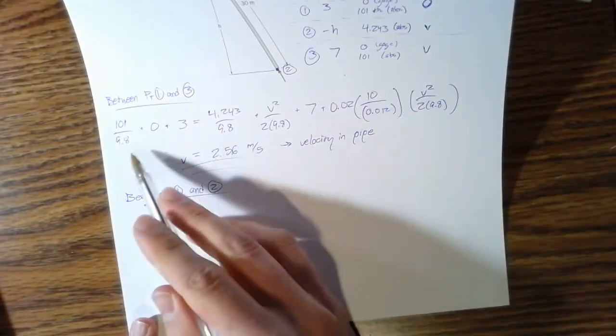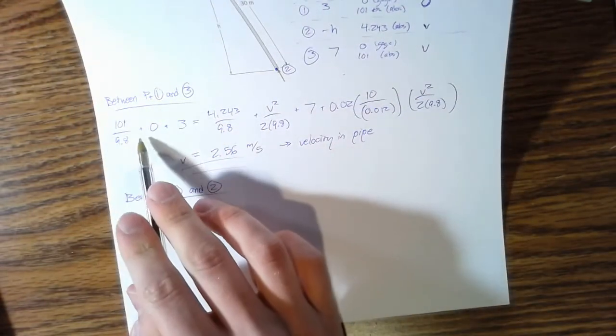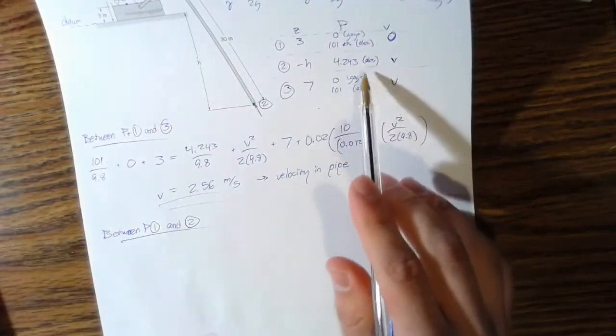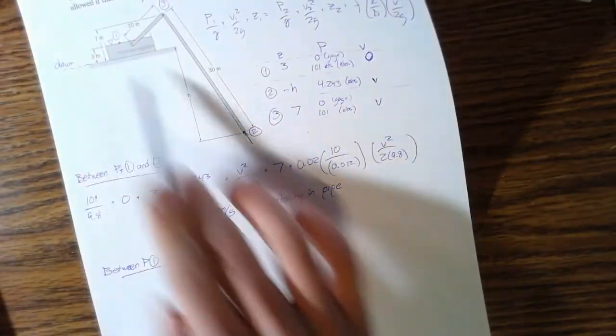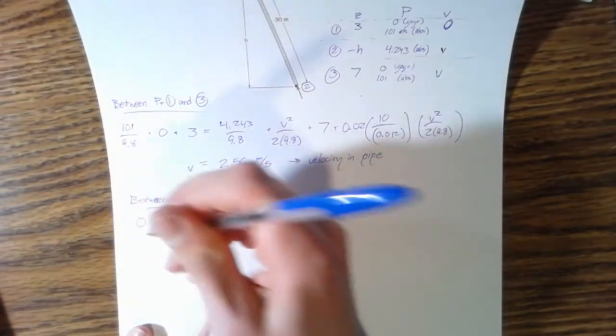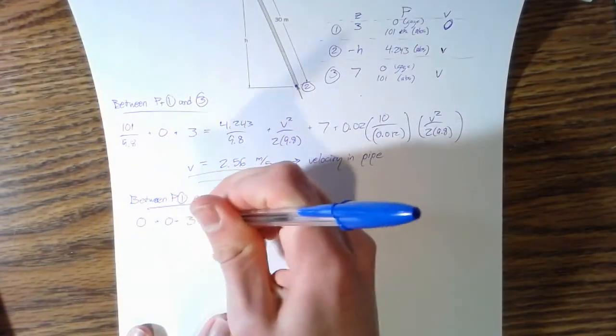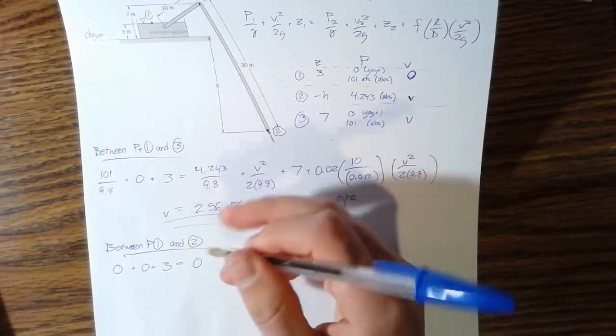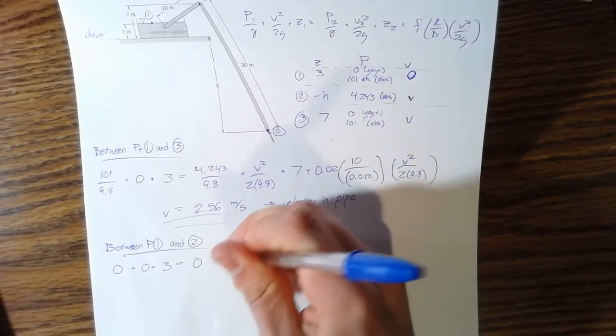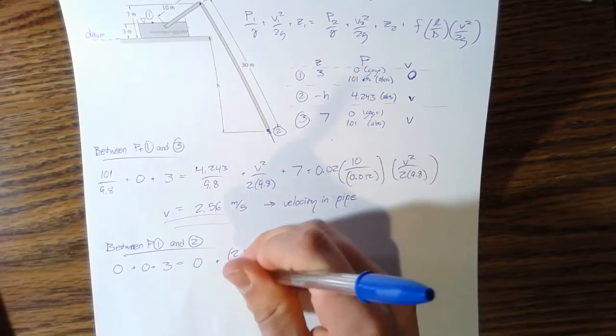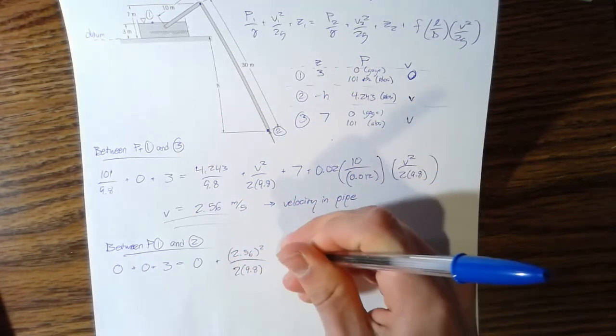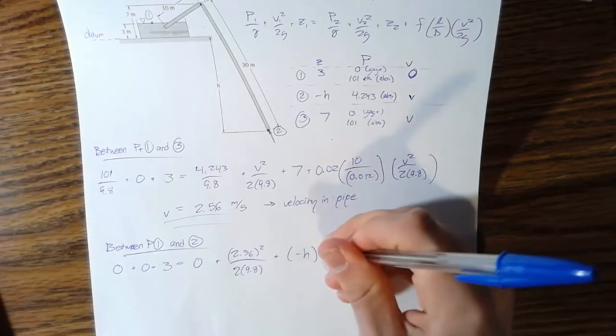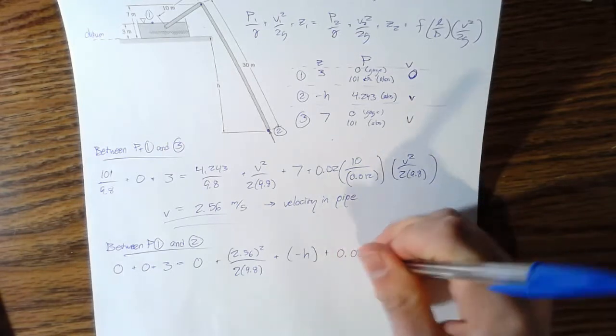That makes it really easy because that means the whole left side of our equation is going to go away, because if we're using gauge pressure, the pressure at these two points is going to be the same, so the difference is zero. So zero plus zero plus 3 equals pressure at 2 of zero, velocity at 2 is that 2.56 that we just calculated, divided by 2 times 9.8, and then our elevation is that negative h.